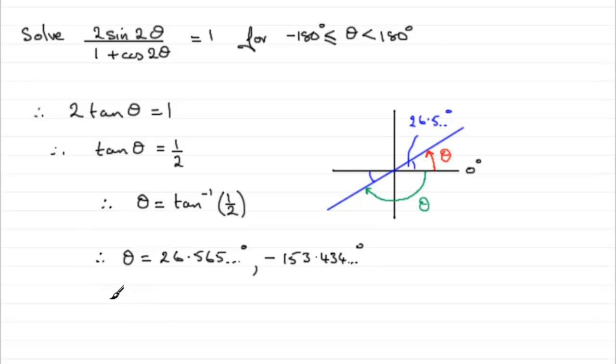Now we need to give our answers to one decimal place, that's what we're told. So therefore theta would equal twenty six point six degrees and minus one hundred and fifty three point four degrees, and I'd write that as both are to one dp.